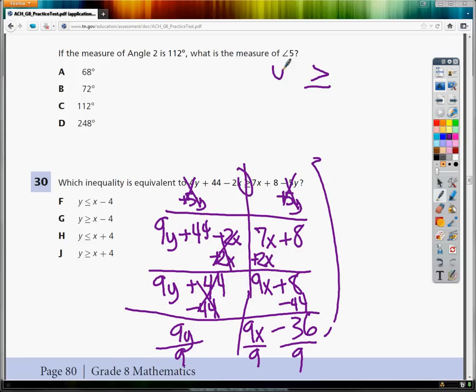It used to be greater than, and it still is. These cancel down below, and 9x divided by 9 is 1x, and negative 36 divided by 9 is negative 4. So y is greater than or equal to x minus 4. So the answer to number 30 is G.